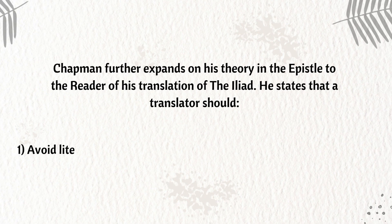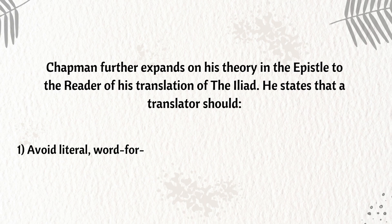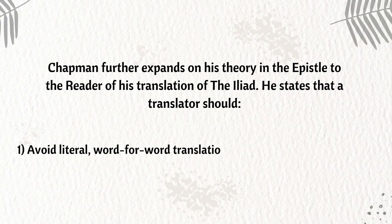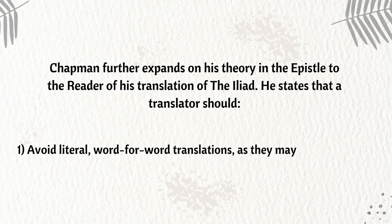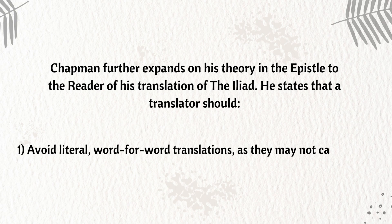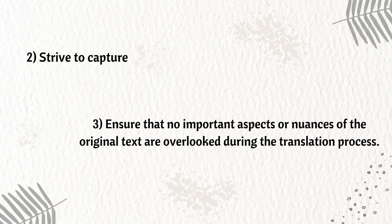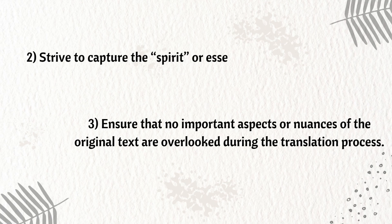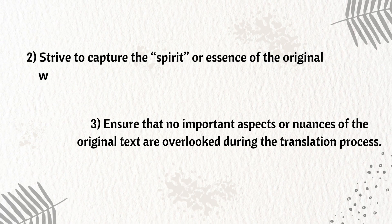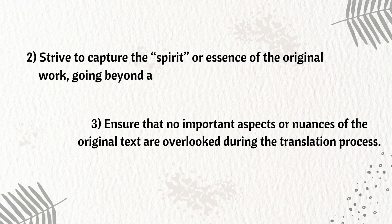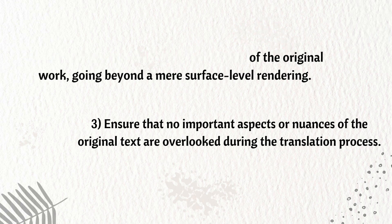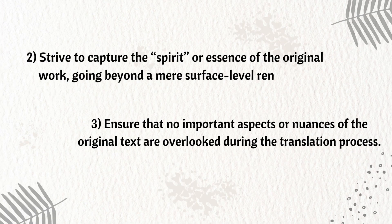Chapman further expands on his theory in the epistle to the reader of his translation of the Iliad. He states that a translator should: 1) avoid literal, word-for-word translations, as they may not capture the intended meaning effectively; 2) strive to capture the spirit or essence of the original work, going beyond a mere surface-level rendering; and 3) ensure that no important aspects or nuances of the original text are overlooked during the translation process.